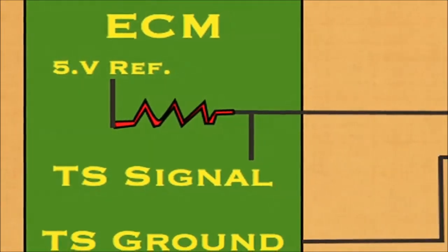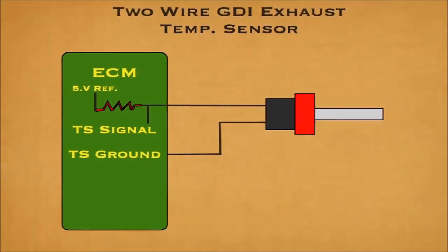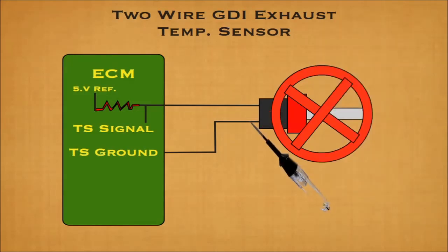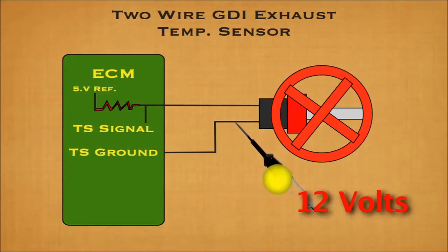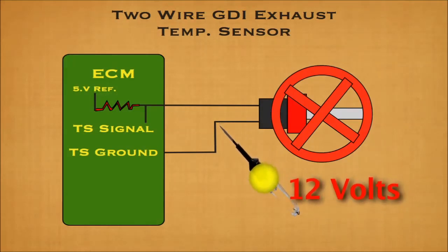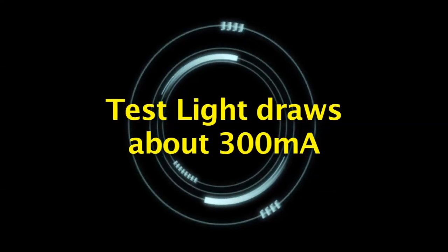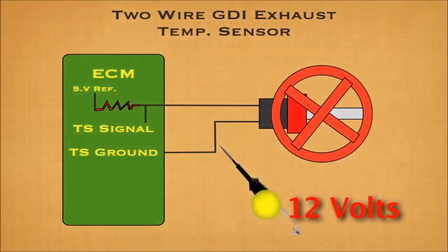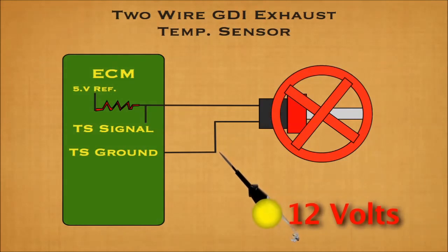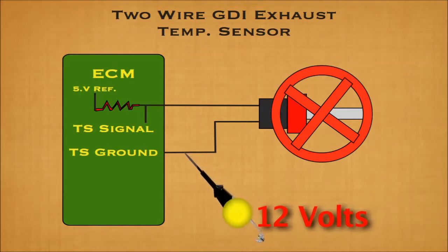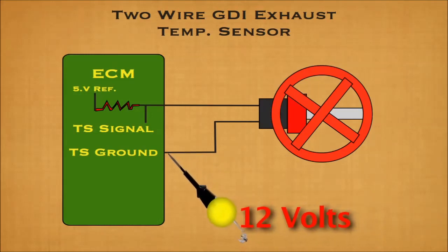Testing the GDI exhaust temperature sensor is fairly simple. First, disconnect the sensor and probe for a five-volt reference using a multimeter. Second, with a test light only, connect the test light to 12-volt power and probe the sensor ground cable. The test light bulb — not to be confused with an LED test light — draws about 300 milliamps, which is fine for any ECM circuit. A lit test light proves proper ground. If a multimeter is used instead, you may get zero volts but not a proper ground. The test light stresses the ECM ground without danger.